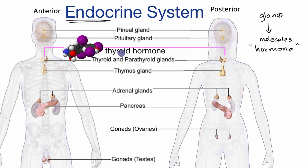Thyroid hormone plays an important role in your metabolism. If you have too much thyroid hormone, that's a disorder called hyperthyroidism, which makes your metabolism overactive. Likewise, if you have too little thyroid hormone, that's a disorder known as hypothyroidism, in which case your metabolism isn't active enough.